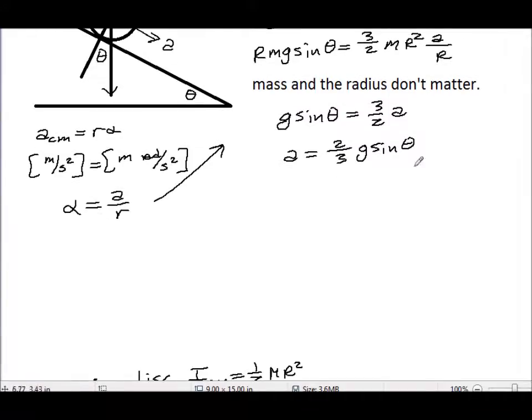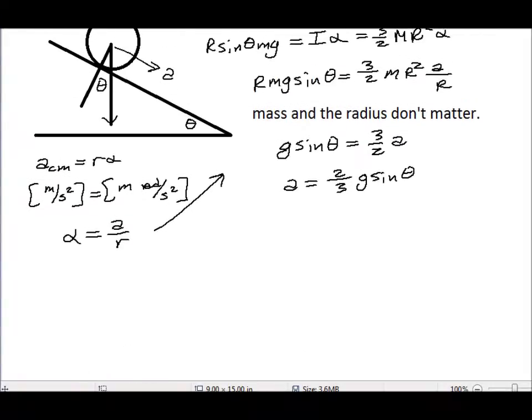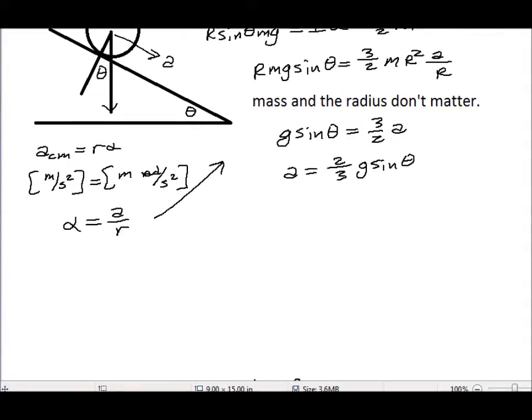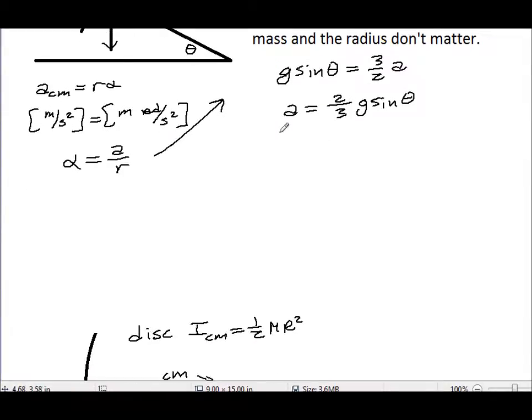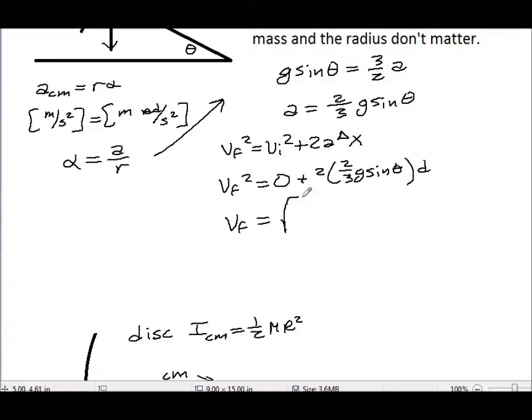But what if I wanted to find the velocity at the bottom of the ramp? We have an equation. Vf squared, that would be our velocity at the bottom of the ramp, equals vi squared plus two a delta x, which in our case is the length of the ramp. Our final velocity equals our initial velocity, let's assume it was at rest, plus two times two thirds g sine theta times d. So our final velocity equals the square root of four thirds g d sine theta.